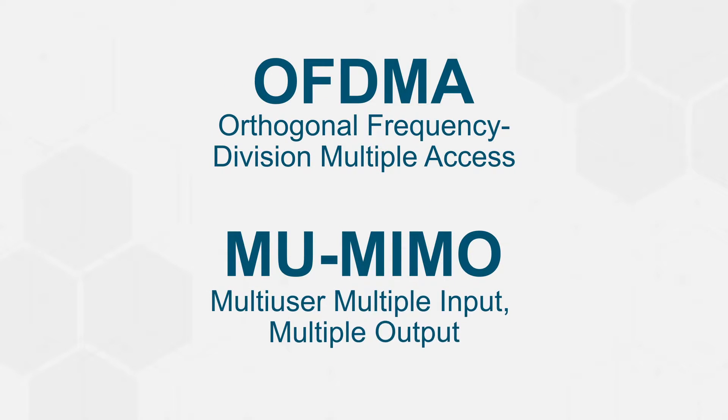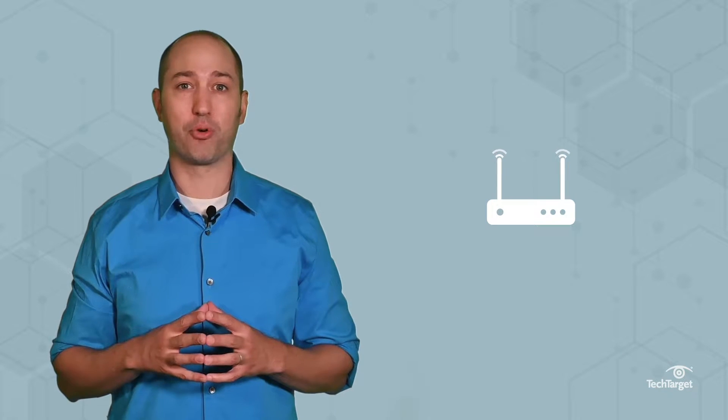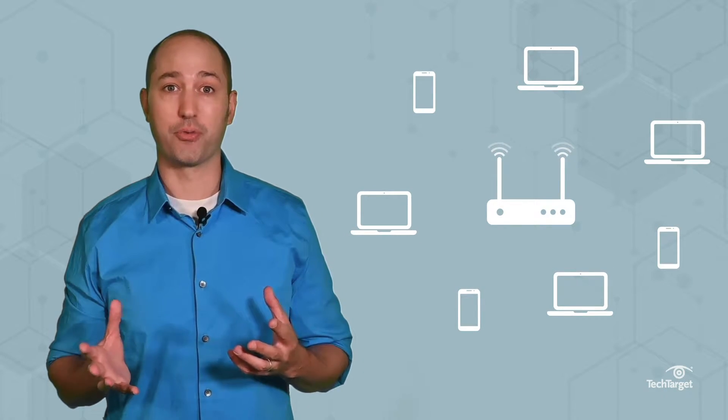OFDMA and Multi-User MIMO are both multi-user technologies, which means they allow a single wireless access point or router to simultaneously communicate with multiple endpoints, like laptops and smartphones. But while OFDMA and Multi-User MIMO complement each other, they also have some key differences.